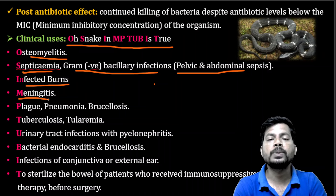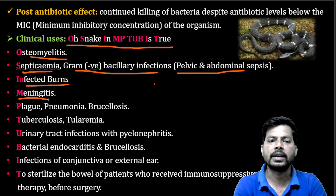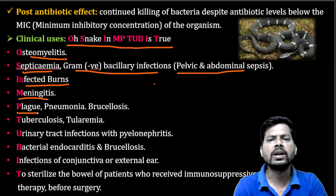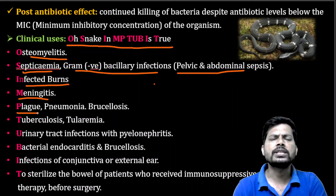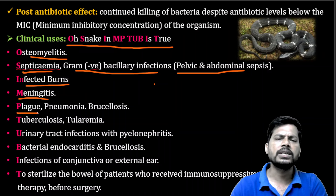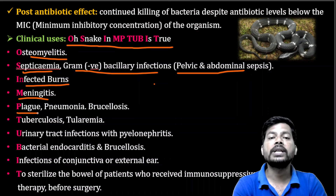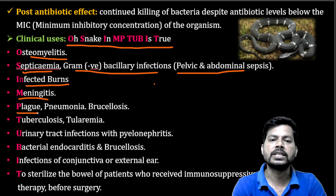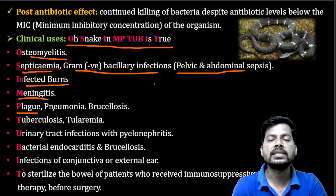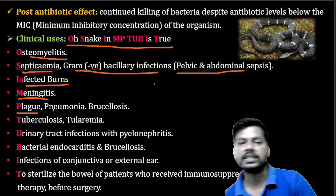Aminoglycosides are used in meningitis — inflammation of the meninges caused by bacteria. They are also used for the plague, which is caused by the bacterium Yersinia pestis (Y-E-R-S-I-N-I-A P-E-S-T-I-S). Plague was very dangerous around the 1950s and 60s but is not as threatening now.